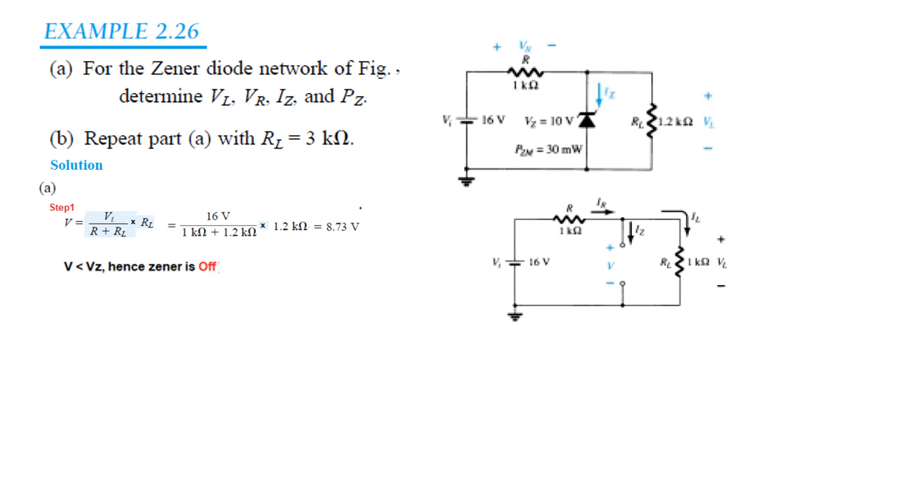So if it is off this voltage will remain whatever we have calculated here. So VL is 8.73. We have calculated and therefore VL is also 8.73 volt.